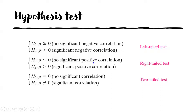For the right-tail test, H₀ is: rho is less than or equal to zero, meaning there is no significant positive correlation. The alternative hypothesis Hₐ is: rho is greater than zero, meaning there is a significant positive correlation.